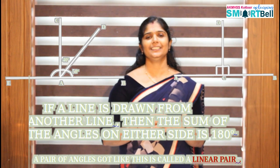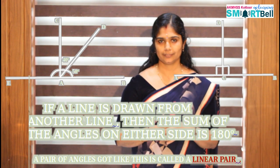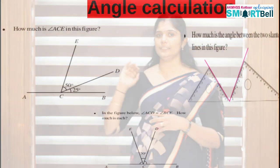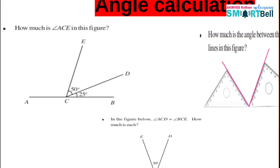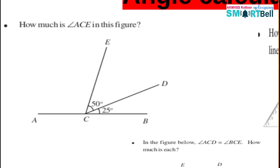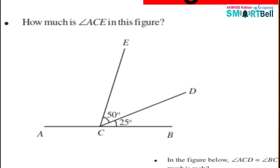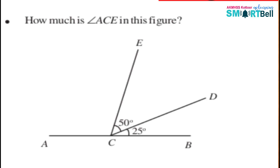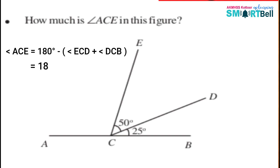Do you understand? Please note this in your notebook. Now let's do some activities. In the first question, look here — how do we find angle ACD? Here we apply the linear pair. Angle ACB plus angle ACD plus angle DCB is equal to 180 degrees. That is 180 degrees minus 50 degrees plus 25 degrees. Then angle ACD is equal to 180 degrees minus 75 degrees. Therefore, angle ACD equals 105 degrees.